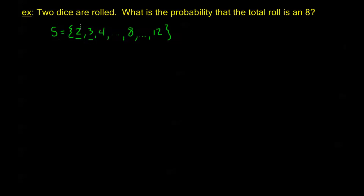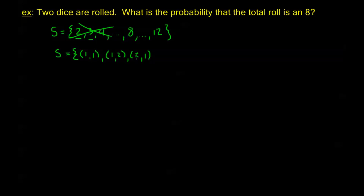Instead of using that S, we let our new S be all possible individual die rolls — ordered pairs like (1,1), (1,2), (2,1), and so on. It's very important to notice that these are different rolls: die one showing one and die two showing two is different from die one showing two and die two showing one. By the multiplication principle, since each die has six outcomes and we roll two dice, the order of S is 6 × 6 = 36. These 36 rolls form a uniform distribution — each is equally likely.